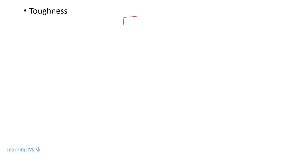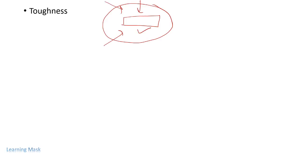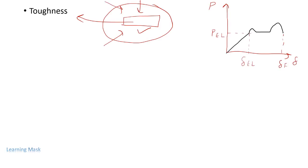The next property is toughness. Toughness is defined as the property of a material that enables it to absorb energy without fracture. If a force is applied to a material, the energy absorbed before fracture is known as toughness. We can understand this with a graph between load P and elongation delta-L: EL is the elastic limit and F is the fracture point. The energy absorbed by the material up to the fracture point is known as toughness.